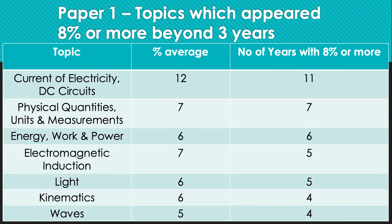The second in position is surprisingly, physical quantities, units and measurements. This topic is not a popular topic tested in paper 2. So it is heavily tested in paper 1. A total of 7% on average with 7 years or more, with 8% or more appear.